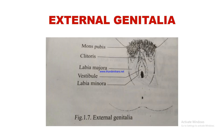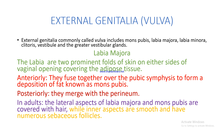External genitalia: the diagram shows the mons pubis, clitoris, labia majora, vestibule, and labia minora. Also visible is the area of the greater vestibular glands and the duct of the greater vestibular gland. This is the site of the Bartholin cyst, which is a very common clinical condition. Collectively, the external genitalia are called the vulva.